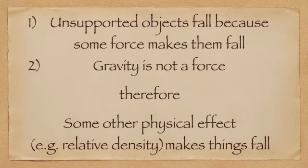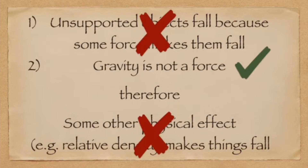The Flurf syllogism proceeds as follows: unsupported objects fall because there is a force acting on them; gravity is not a force; therefore there is something other than gravity that is making them fall. The problem with this line of argument is that the first axiom employed — that objects fall because there is a force applied to them — is simply false. Because their predicate is invalid, their conclusion is invalid.